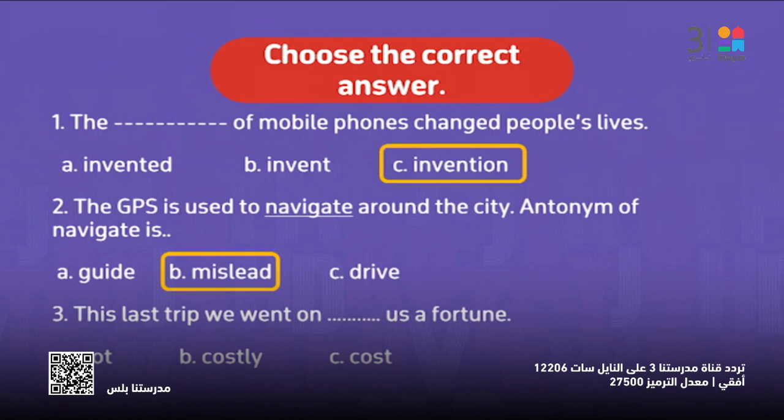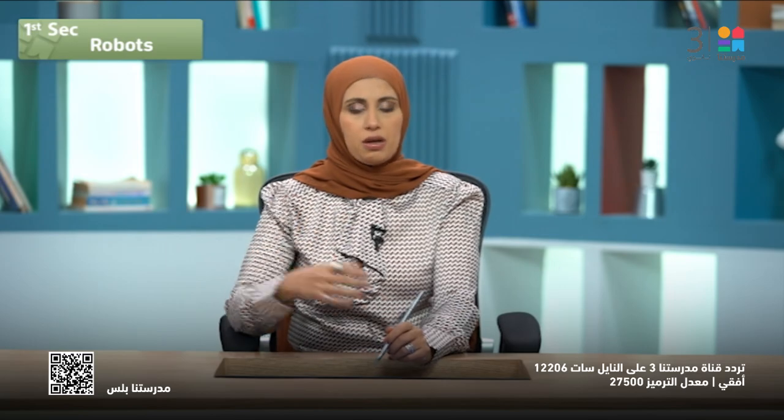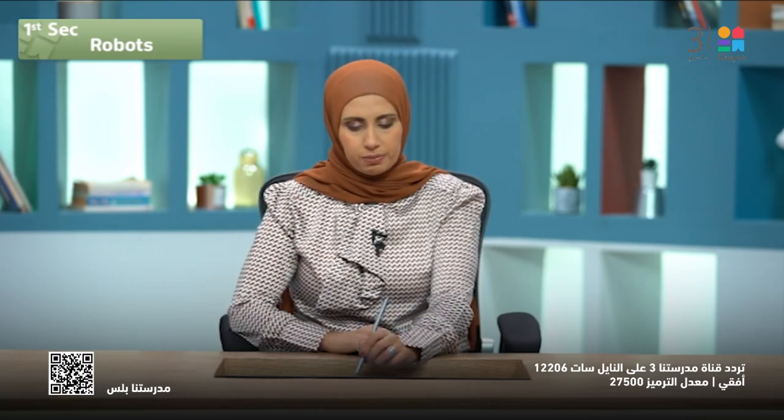This last trip we went on ___ us a fortune. Fortune means a lot of money. The options are: got, costly, or cost. Past simple here — I want a verb. So it has to be 'cost us a fortune.' By the way, the expression 'cost a fortune' means that you paid a lot of money for it.